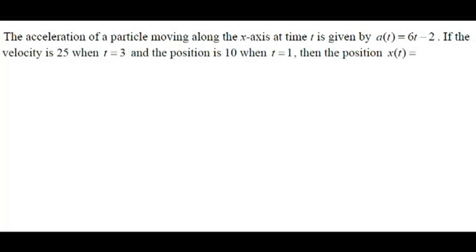The acceleration of a particle moving along the x-axis at time t is given by a(t) = 6t - 2. If the velocity is 25 when t = 3 and the position is 10 when t = 1, then the position x(t) is equal to what?